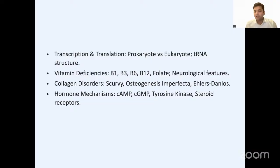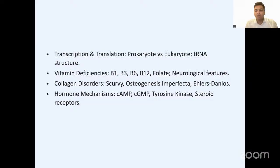From collagen, focus on scurvy and osteogenesis imperfecta — particularly the mechanism of how they develop. Osteogenesis imperfecta: why it happens, what are the buzzwords and keywords for diagnosis. Then hormone mechanisms — which hormone works by which pathway: tyrosine kinase, cAMP, cGMP, and the secondary messengers. A simple table of which hormones use tyrosine kinase, which use cAMP, and which use cGMP.